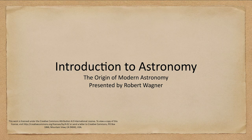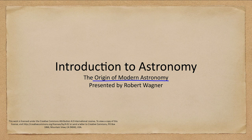Greetings and welcome to the introduction to astronomy. In this lecture we are going to talk about the beginnings of modern astronomy. Previously we talked about some of the ancient astronomy, especially the astronomy of the Greeks that gave us the basis of our current astronomy. Now we will see how things changed in the Renaissance as we began to get a better physical understanding of what was happening in the solar system.